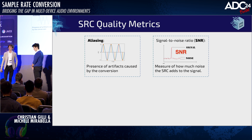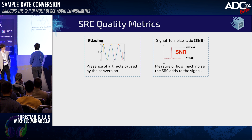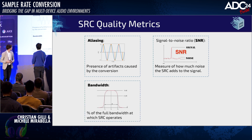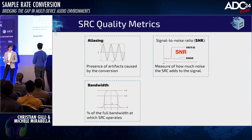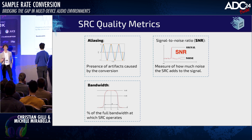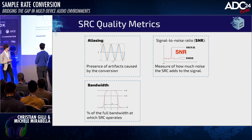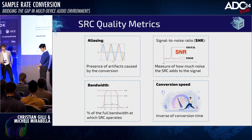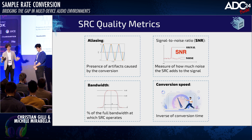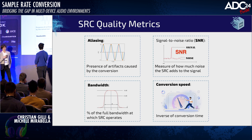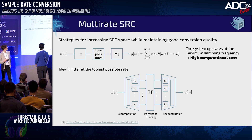The first metric is the signal-to-noise ratio (SNR), which measures the noise your converter is introducing in the system — the higher the SNR, the lower the noise, so the better. A third key performance indicator is the bandwidth of the SRC, usually measured as a percentage of the full bandwidth, related to the FIR filter design. Last but not least, there's the conversion speed — you want your converter to be as fast as possible and handle a huge number of samples. The filtering approach I presented introduces very high computational complexity because we are filtering at the maximum sampling frequency, then discarding some samples, which is very inefficient.